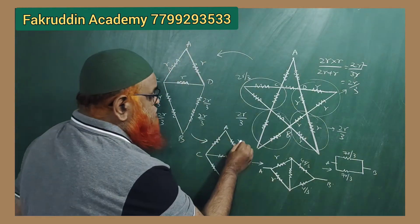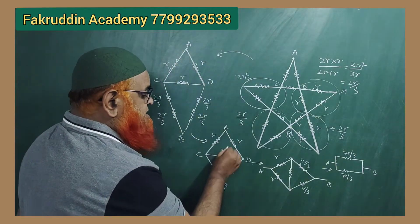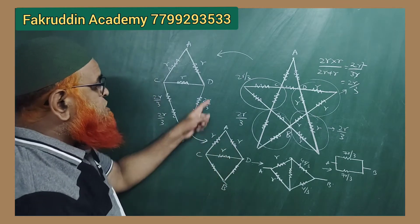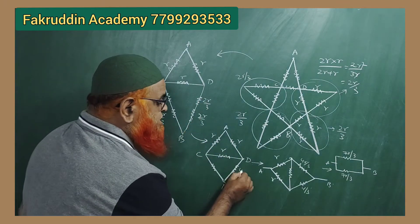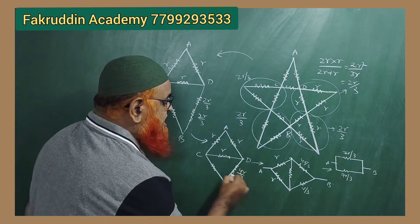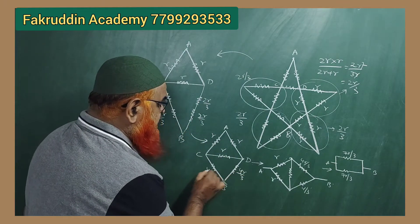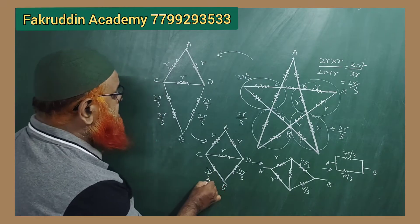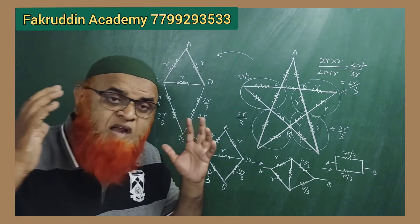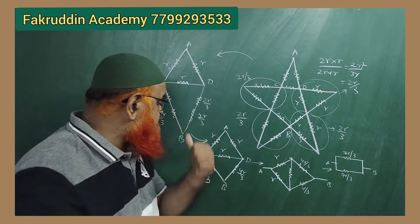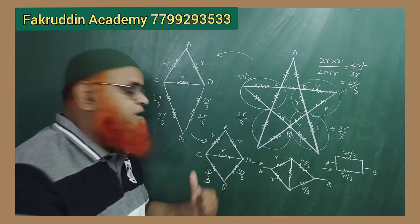Simplifying further, 2R by 3 plus 2R by 3 gives 4R by 3 for the top branch, and again 2R by 3 plus 2R by 3 gives 4R by 3 for the bottom branch. There is also a middle resistor R connecting C and D.